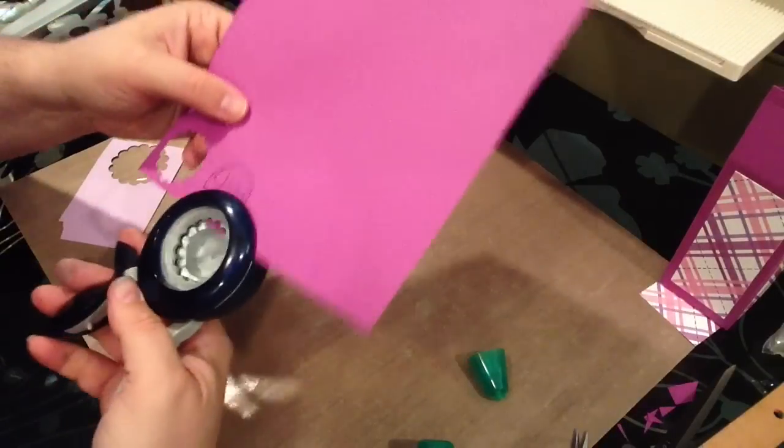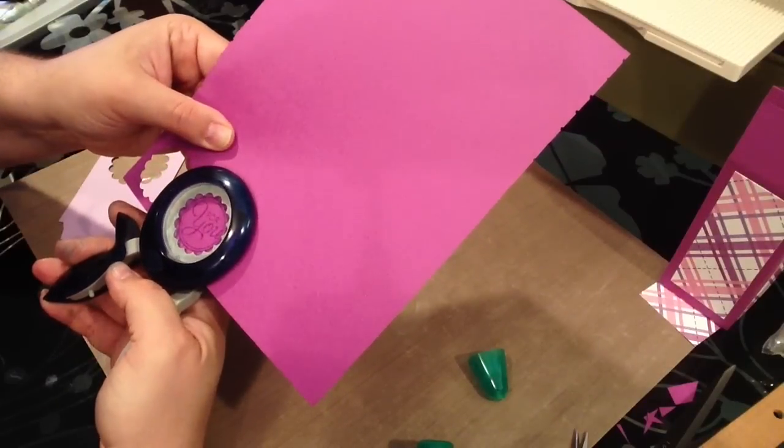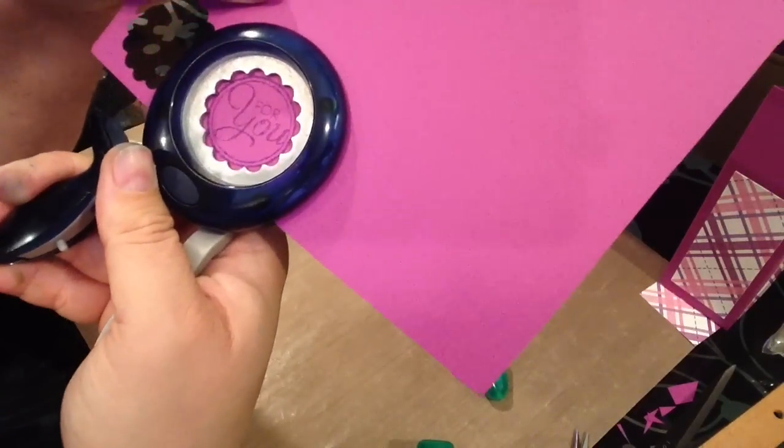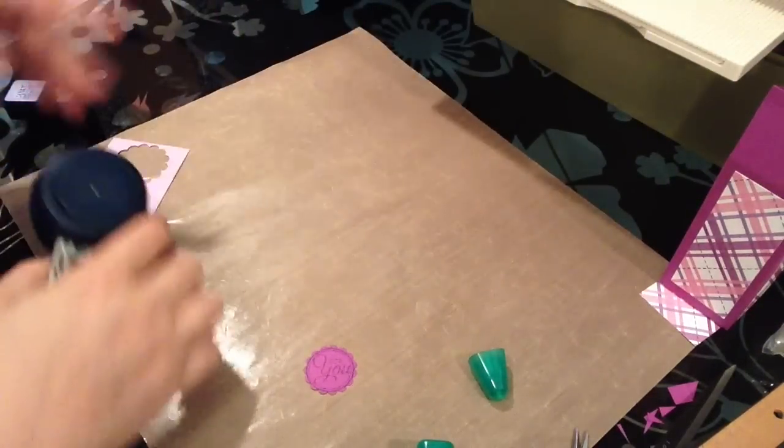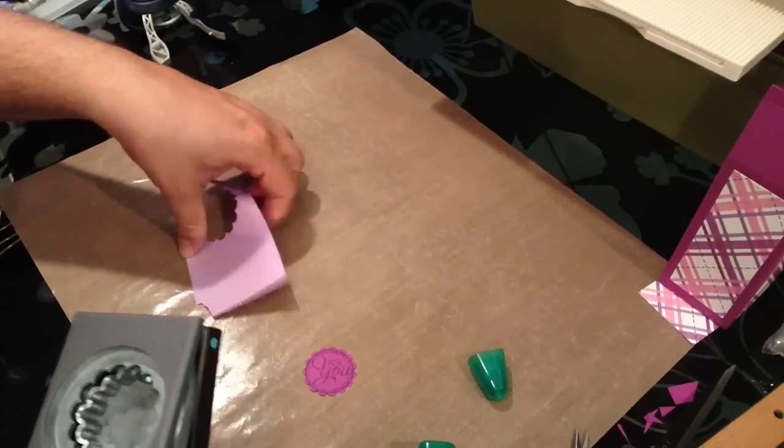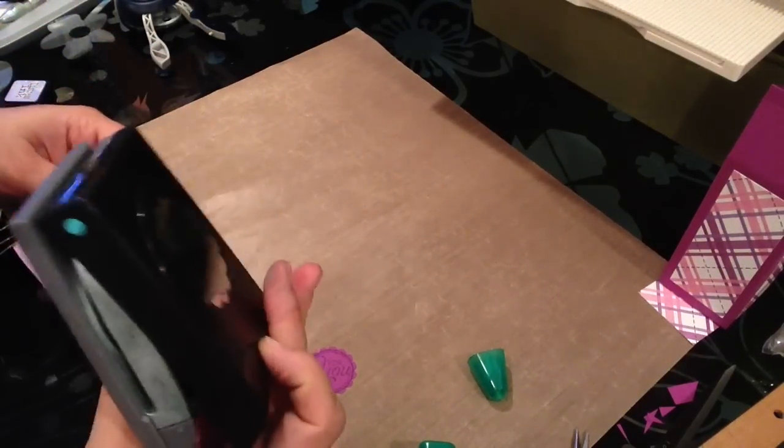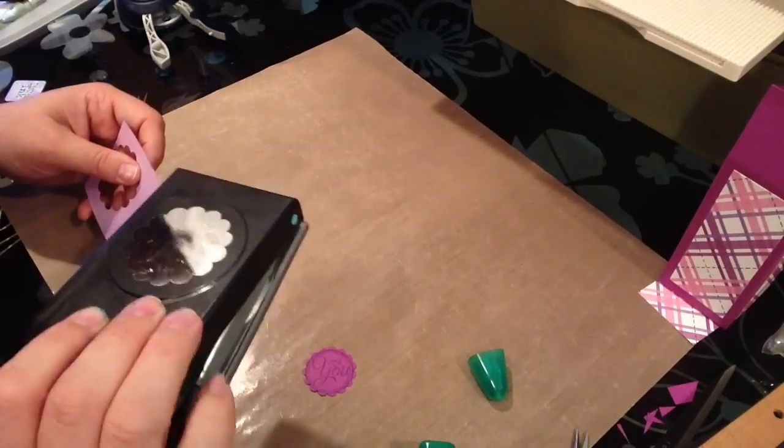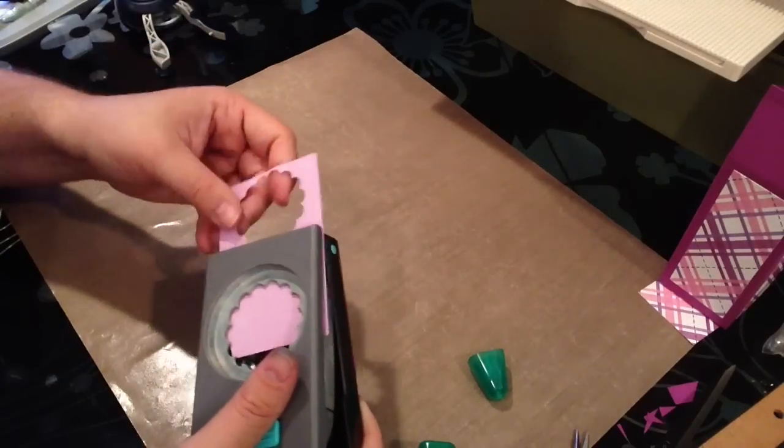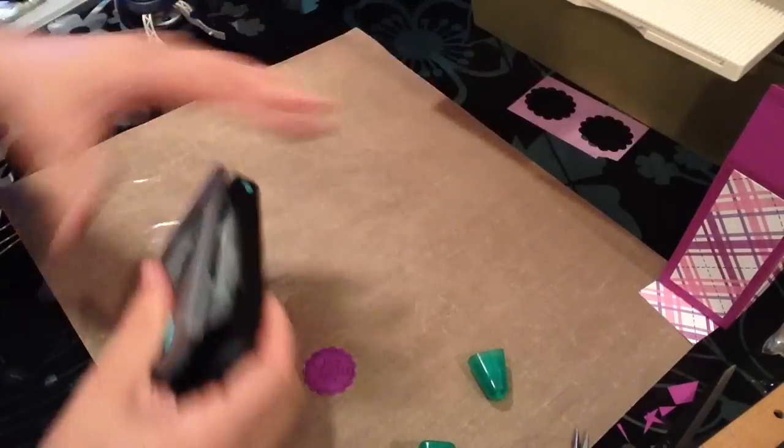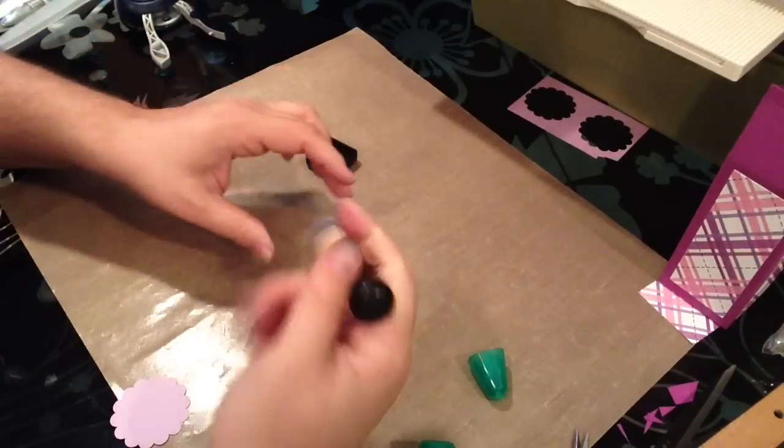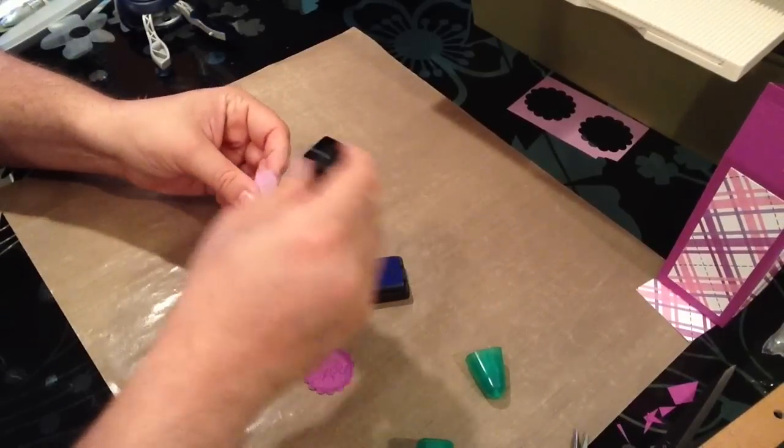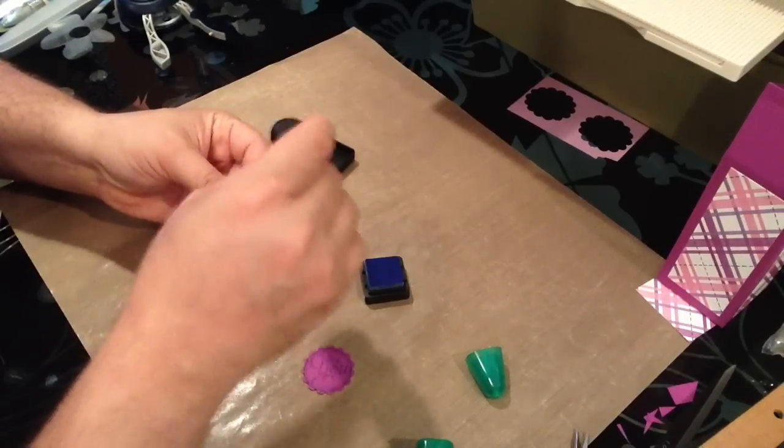Then I'm going to take my Fiskars punch and kind of line that up, the scallop edge on the stamp itself if you can see that there. Punch that out. I have another piece of just sort of a pale lilac color and I have a scallop punch. This isn't stamping up, this is EK. Then again I'm going to take my shaded lilac and I have the round blending tool. I'm going to take that distress ink and just go around the edges here.